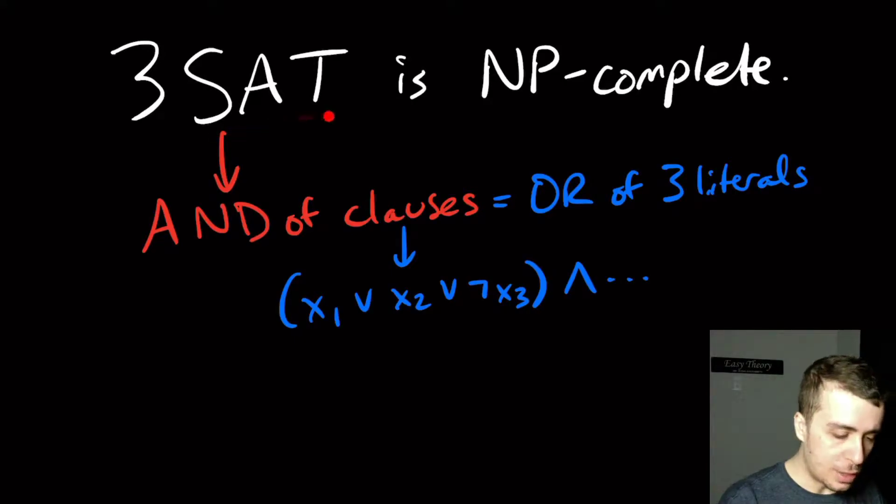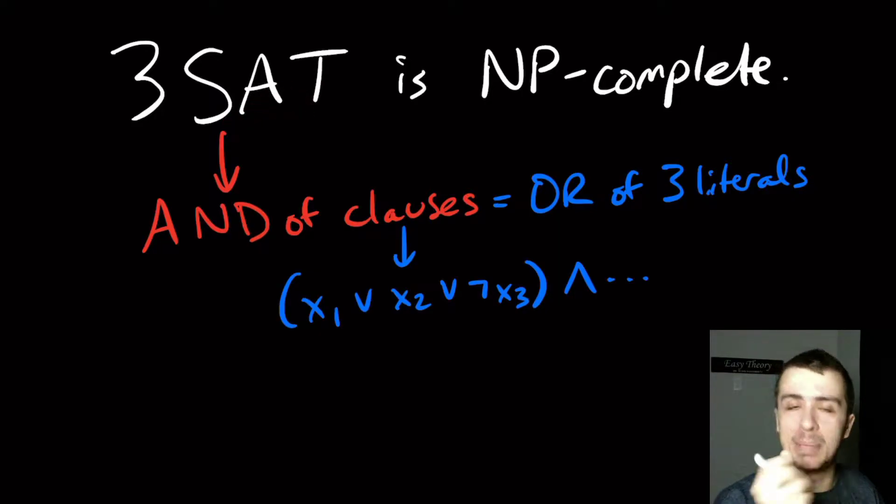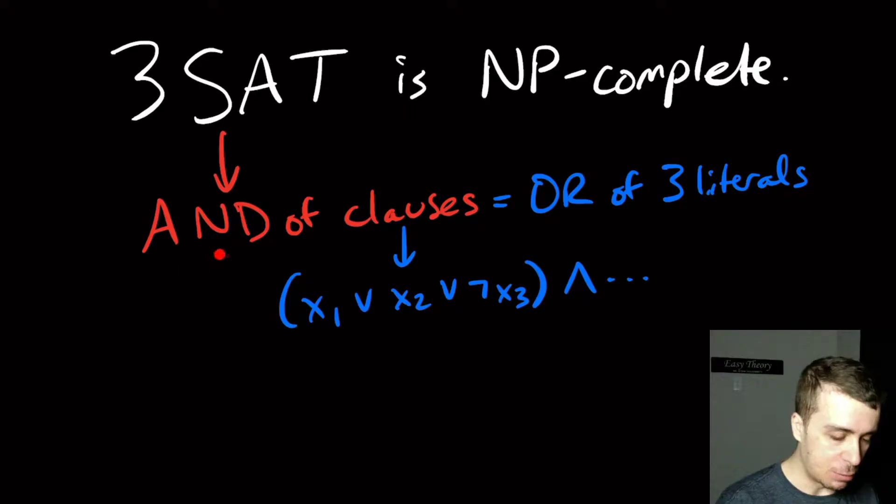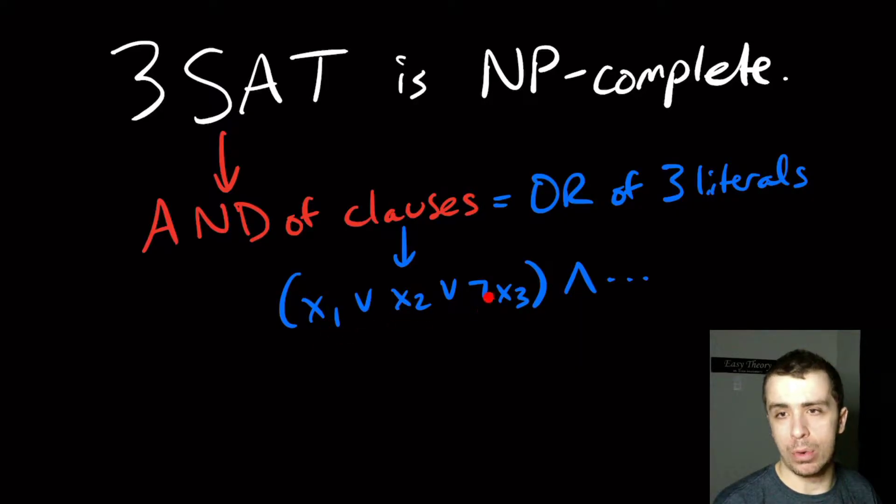Hi, so I want to show that the 3SAT problem is NP-complete. The 3SAT problem is a very specific form of formulas for Boolean satisfiability. If SAT was general, here is a very specific one, which is we have an AND of clauses. So a clause here is just an OR of exactly three literals. A literal means a variable or the negation of a variable. So x1 or x2 or not x3 and some other clauses.